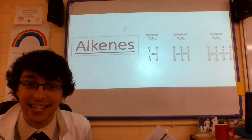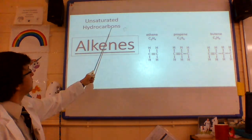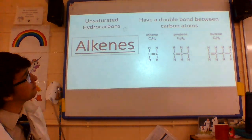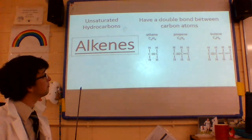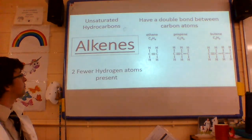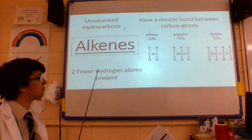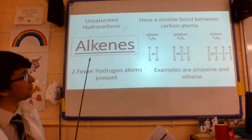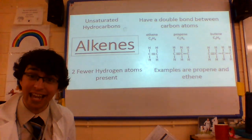What about alkenes? Alkenes are unsaturated hydrocarbons. Alkenes have a double bond between the carbons. Alkenes have two fewer hydrogens present, so examples are propene and ethene. How splendid. Let's go again.